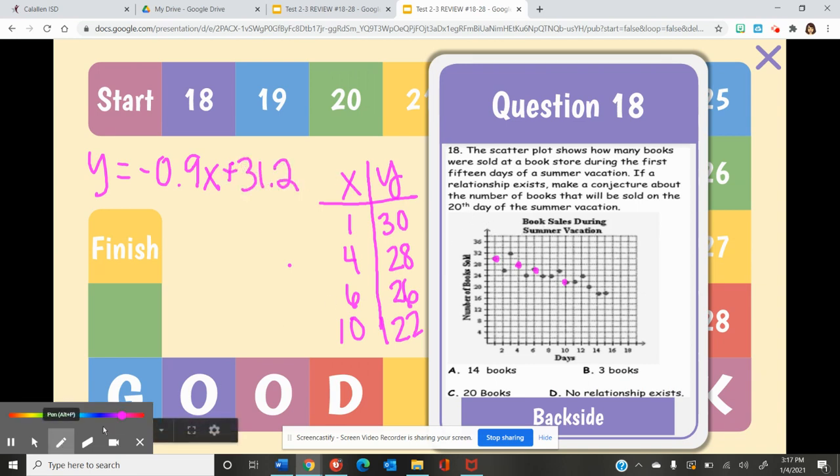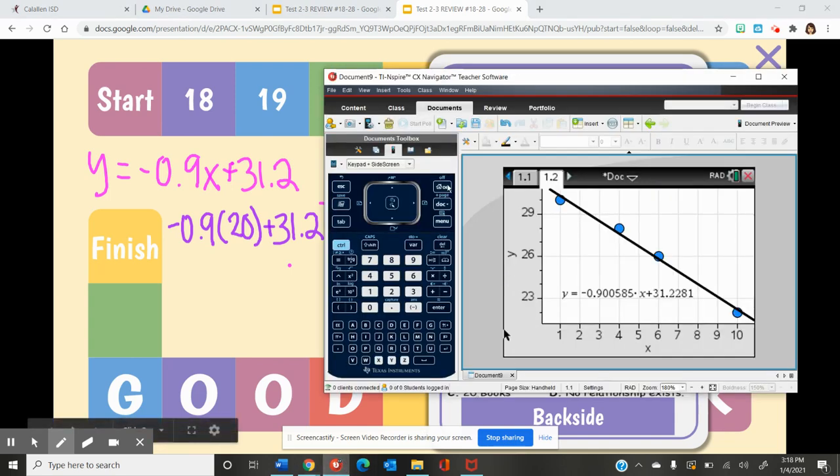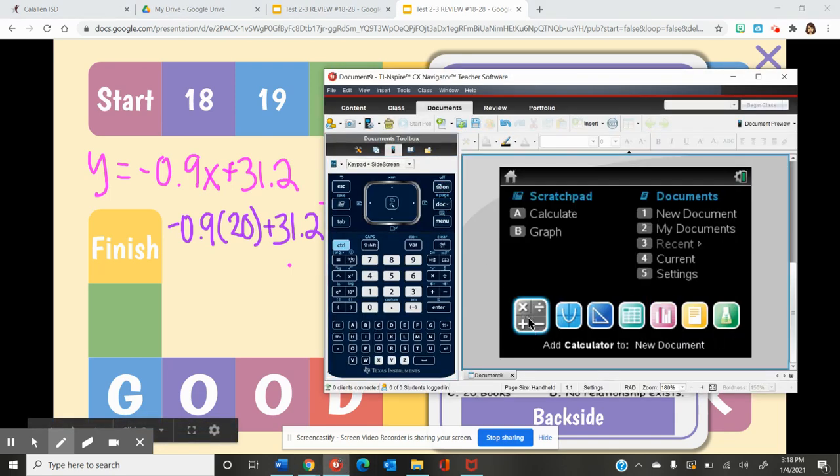If you look here, days is our X value. So what I want to do with that 20 is substitute 20 for X. So this is negative 0.9 times 20 plus 31.2. I'm going to go back to my calculator and go to the calculator.